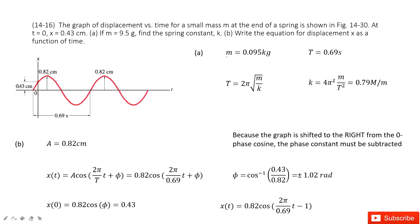It tells us the amplitude and the period, 0.69 seconds. If we want to find the spring constant, we can consider this equation: T equals 2π times the square root of m over k. So we can solve this equation to find k.